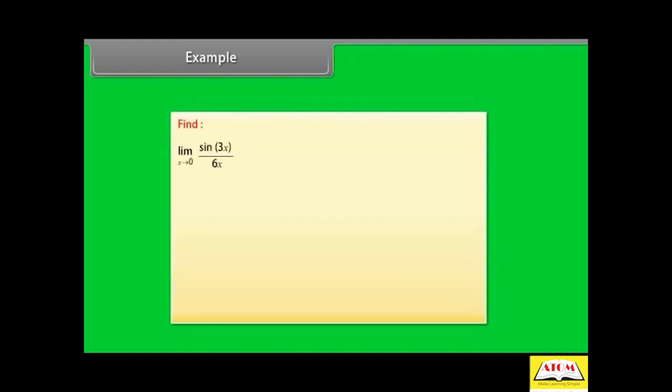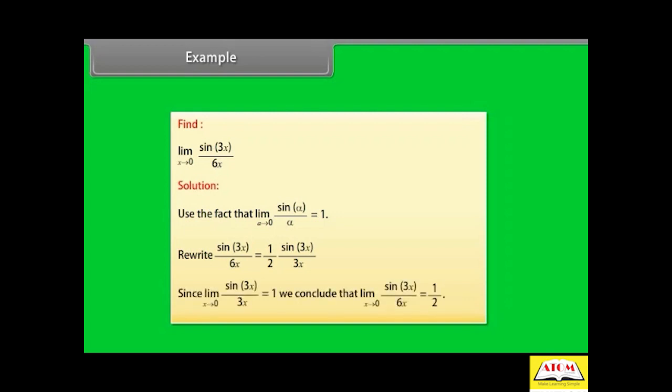Find limit x→0 of sin(3x) / (6x). Solution: use the fact that limit α→0 of (sin α / α) = 1. Rewrite sin(3x) / (6x) = (1/2) · sin(3x) / (3x). Then limit x→0 of sin(3x) / (3x) = 1. We conclude that limit x→0 of sin(3x) / (6x) = 1/2.